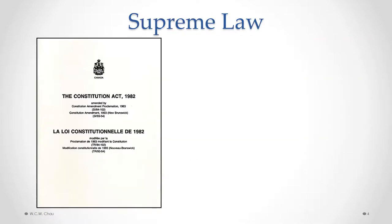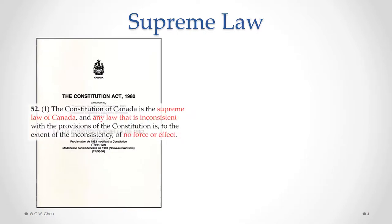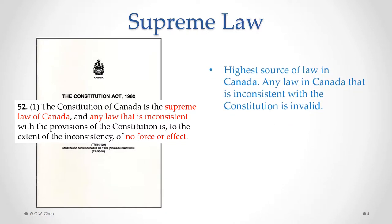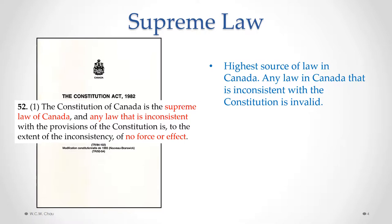The Constitution of Canada is made up of two pieces of legislation. The first is the Constitution Act 1982 and the second is the Constitution Act 1867. The Constitution Act 1982 includes the Charter of Rights and Freedoms, which we will talk about in the next part of this module. But it also includes the rule which makes the Constitution the supreme law of Canada. So what that means is that any law made by a government in Canada — whether federal, provincial, or municipal — if it is inconsistent with the Constitution, that law is deemed to be invalid.